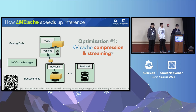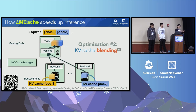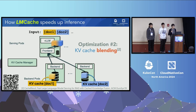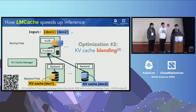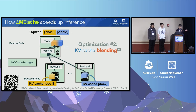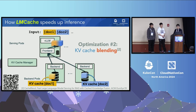More than just compressing KV cache, we also allow KV cache to be composed dynamically. If you have input with multiple contexts at the same time, and you've seen those context documents separately before, you can combine the KV cache dynamically so you don't have to re-read the whole documents over and over again. There are many more engineering optimizations behind the LMCache system — feel free to check out the code repository.